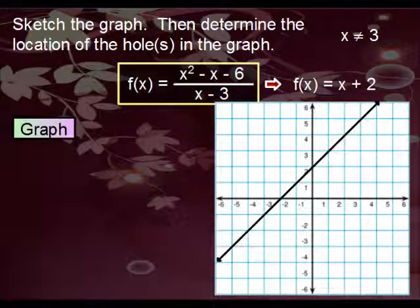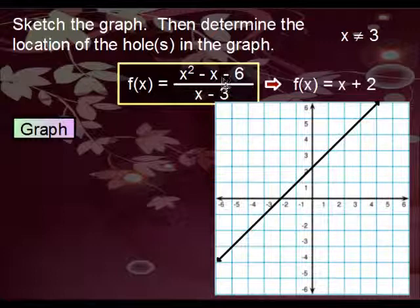This is what we were given in the beginning. Now there is only one difference between the two. Remember that since this is essentially the equivalent of x plus two, yes, it's the same graph, but with one exception. Since in the beginning, we determined that the domain could not include three, that means there's going to be a hole in the graph, right where three is.